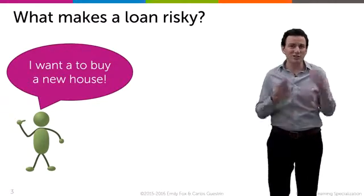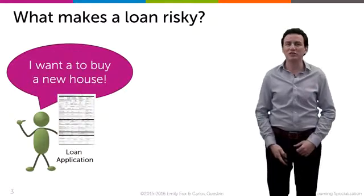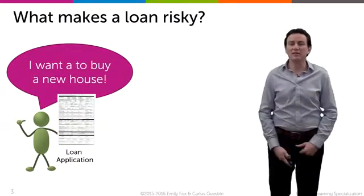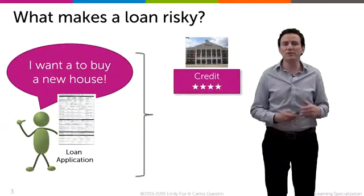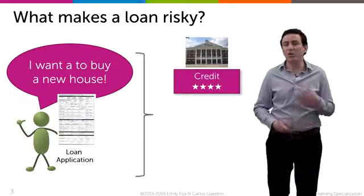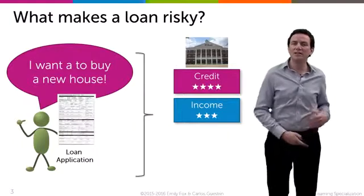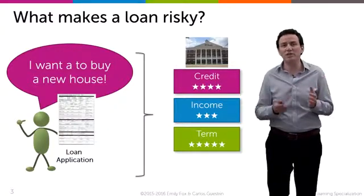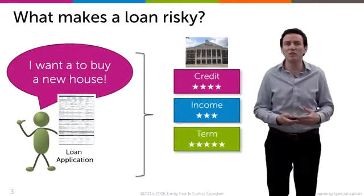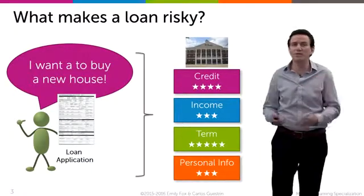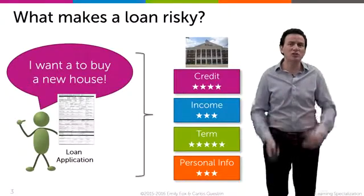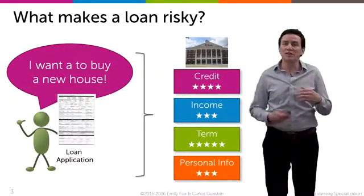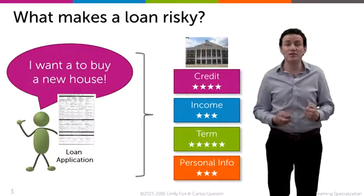So let's say I want to buy a house. I want to buy this particular house, and to buy it I don't have all the money I need, so I take a loan from the bank. The bank is going to look at some properties of my history — like my credit, what it's been like in the past, how much money I make, how long my loan is, and other personal information like my gender, age, and so on — and try to make a prediction as to whether loaning me money is a risky thing or not.